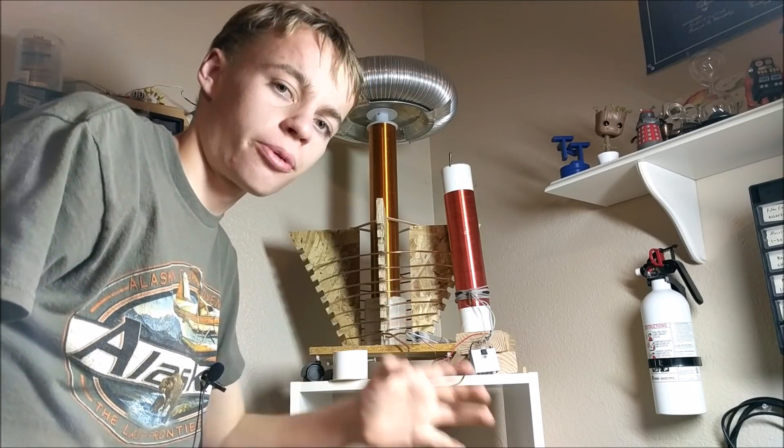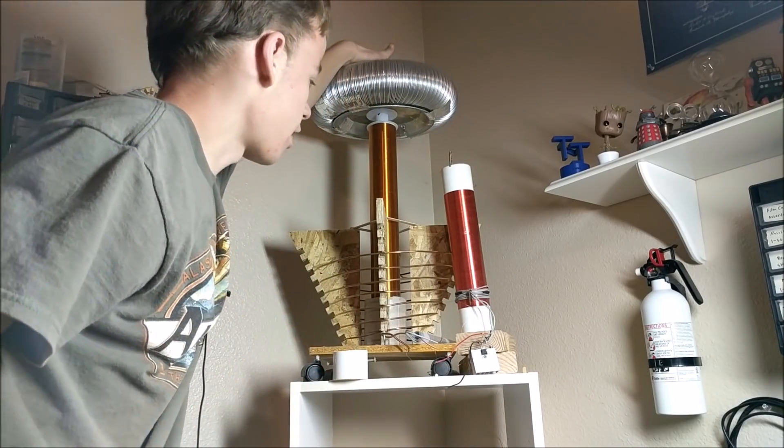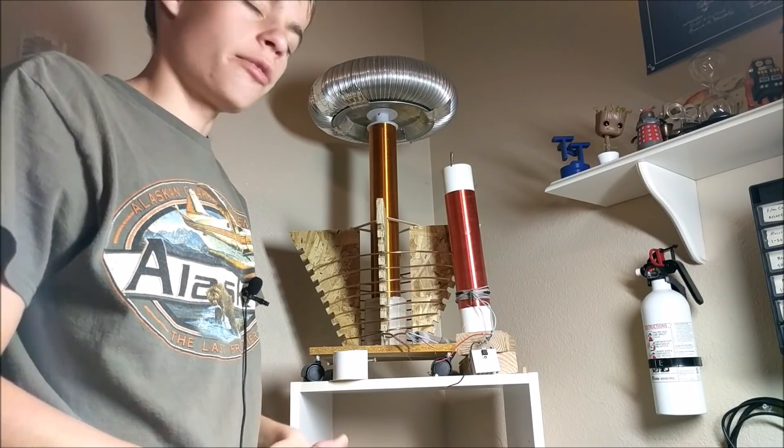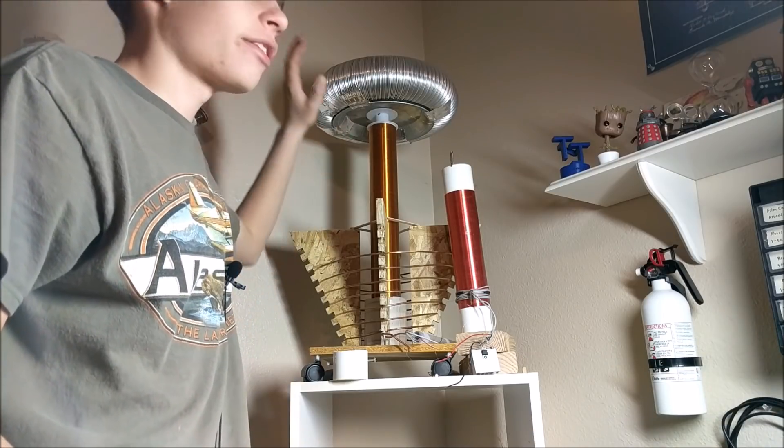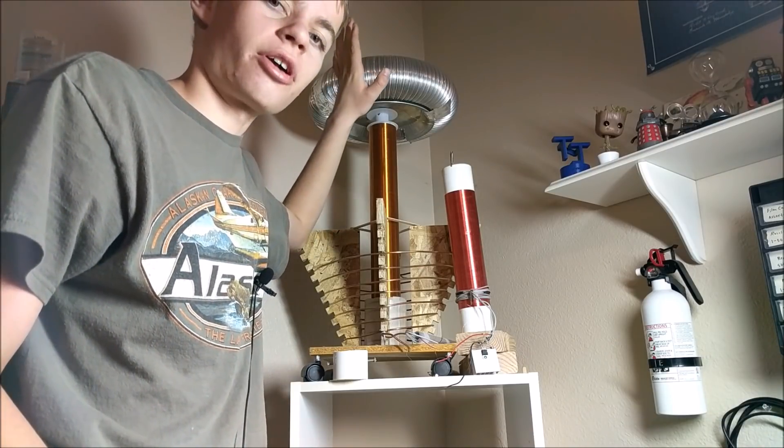And to understand how a rotary spark gap works and what it's for, we first need to take a look at this Tesla coil. Now, basically what a Tesla coil is, it's a resonant transformer, and it'll create some really cool high voltage arcs coming off the top.